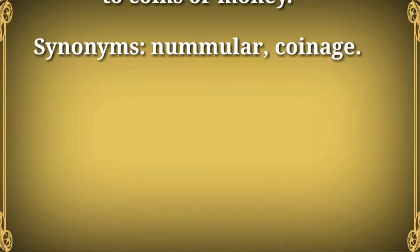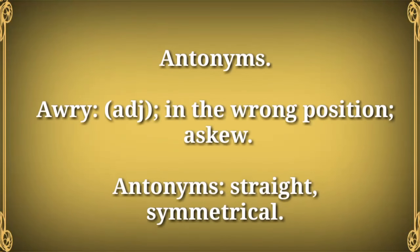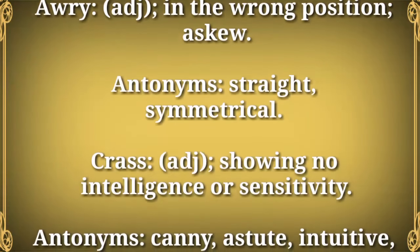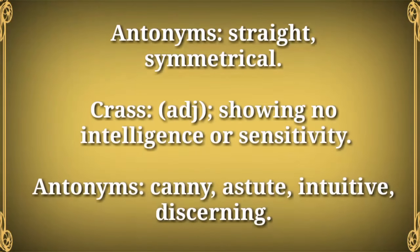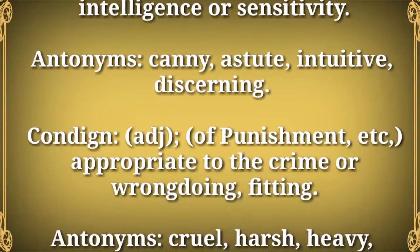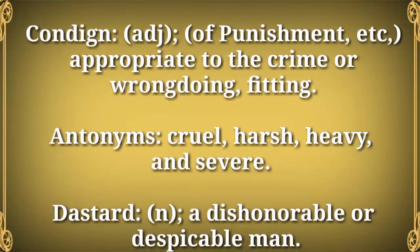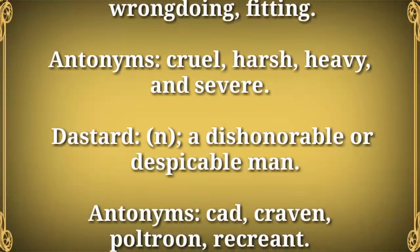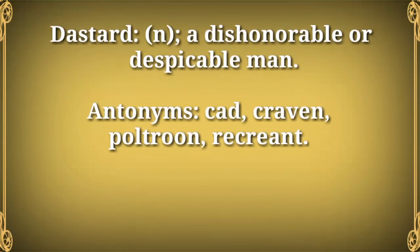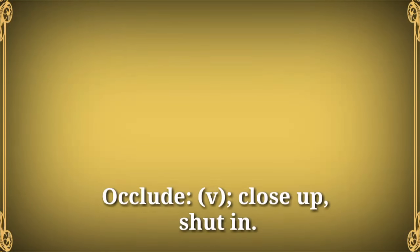Nummary (adj) — of or relating to coins or money. Synonyms: nummular, coinage. Antonyms section: Awry (adj) — in the wrong position, askew. Antonyms: straight, symmetrical. Crass (adj) — showing no intelligence or sensitivity. Antonyms: canny, astute, intuitive, discerning. Condign (adj) — of punishment: appropriate to the crime or wrongdoing, fitting. Antonyms: cruel, harsh, heavy, and severe.